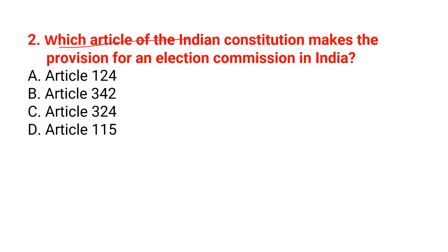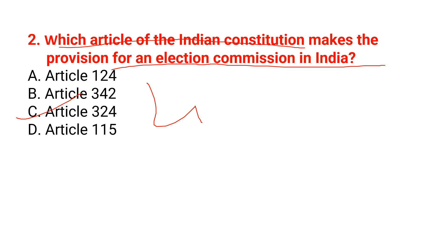Which article of the Indian Constitution makes the provision for an Election Commission in India? The correct option is Article 324. In Article 324, the Election Commission of India is mentioned.